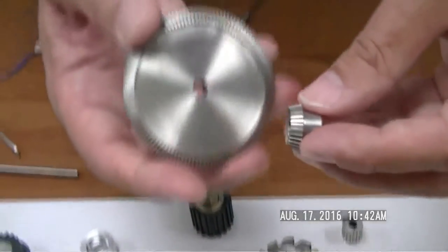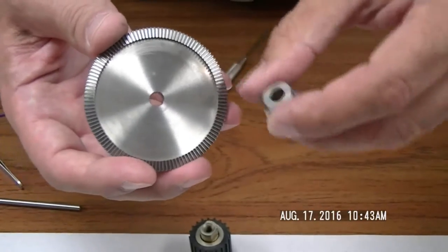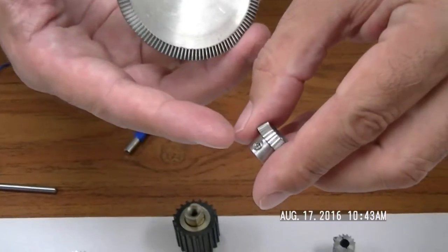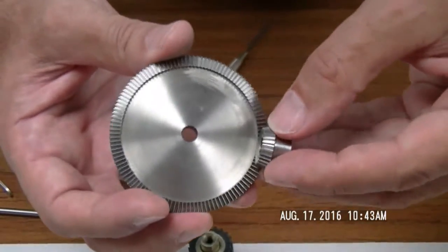These come in an anti-backlash version also, which I'm holding a standard one. This is a pin hub with a set screw, but we also make the split hub version, and as I said, the anti-backlash version.